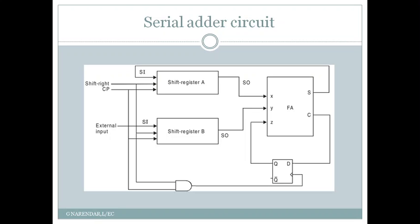For each succeeding clock pulse the new sum bit is transferred to register A and the new carry is transferred to the D flip-flop, and both registers are shifted once to the right. With each clock pulse the bits in the two registers are shifted one position to the right, become available at the serial output, and are provided as X and Y bits to the full adder. This process continues until addition is carried out in all bit positions. There is a significant hardware advantage: only one full adder is needed regardless of how many bits are in the data.